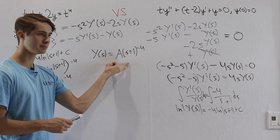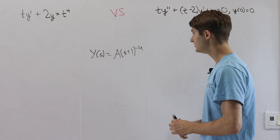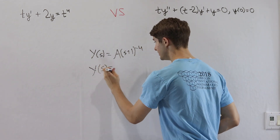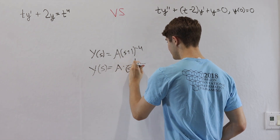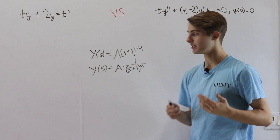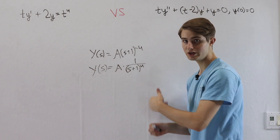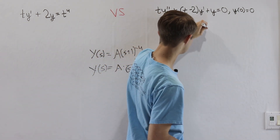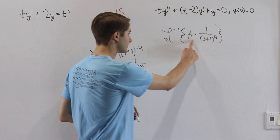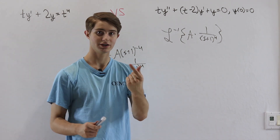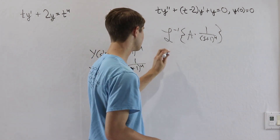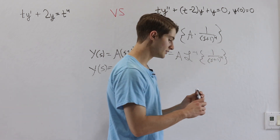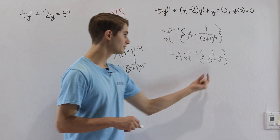Now we take the inverse Laplace transform of Y of s. Rewriting with s plus 1 to the negative 4 in the denominator, we have A times 1 over s plus 1 to the 4th. We pull the constant A outside the inverse Laplace transform, just as we pull constants out of integrals. So we need the inverse Laplace transform of 1 over s plus 1 to the 4th.